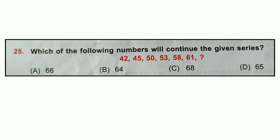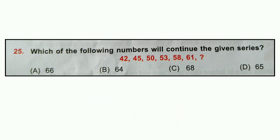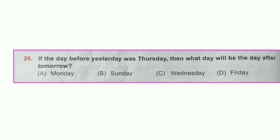Question number twenty-five: Which of the following numbers will continue the given series? 42, 45, 50, 53, 58, 61, ___. The series continues with the pattern +3, +5, +3, +5. After 61, adding 5 gives 66. Option A is correct: 66.